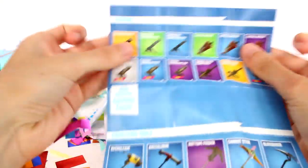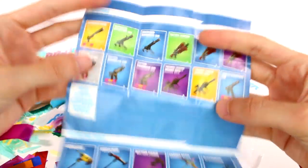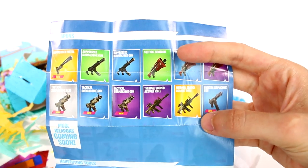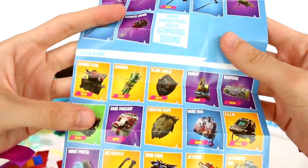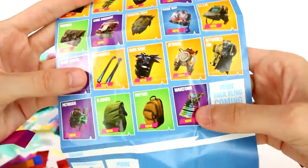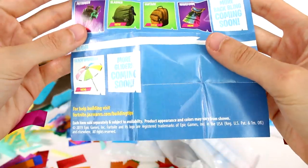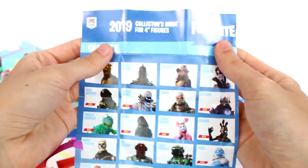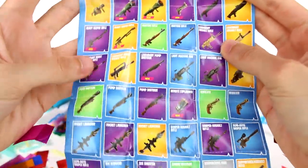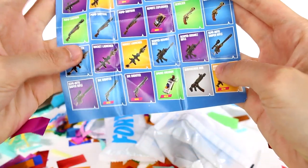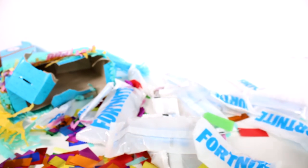So here are the outfits and then all of the accessories. We have a ton of stuff. My goodness. Let me kind of go through this slowly if I can. There's so much confetti just sticking everywhere. We have all of these, the back bling, the glider. I like the beach umbrella. And then, of course, the outfits.